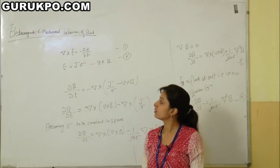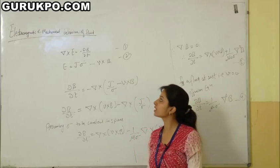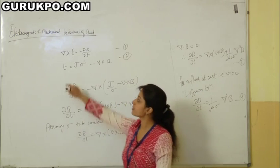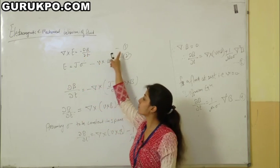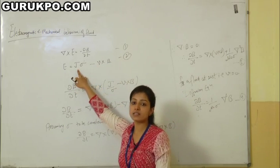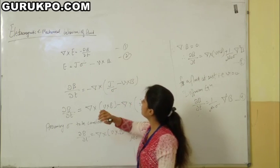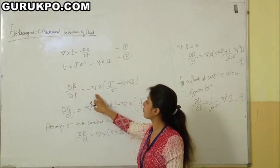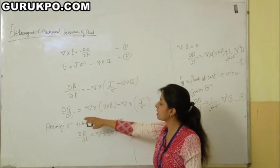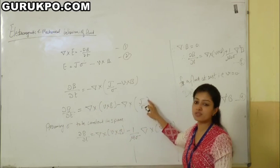The electromagnetic and mechanical behavior of the fluid can be described by its electrical conductivity sigma. The electromagnetic equations in the fluid are: curl E equals minus del·B/del·t, and E equals j/sigma minus v×B, where j is the current density and sigma is the electrical conductivity. Using these, del·B/del·t equals minus curl of (j/sigma minus v×B), which after substitution gives del·B/del·t equals curl(v×B) minus curl(j/sigma).